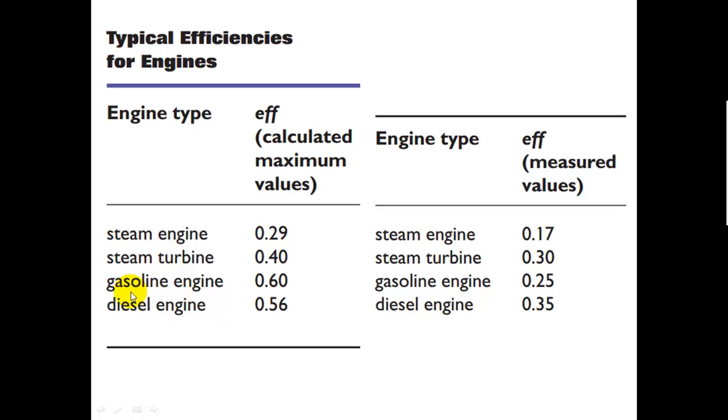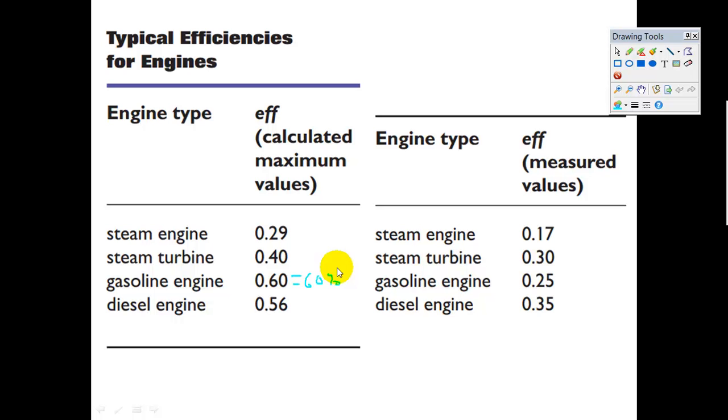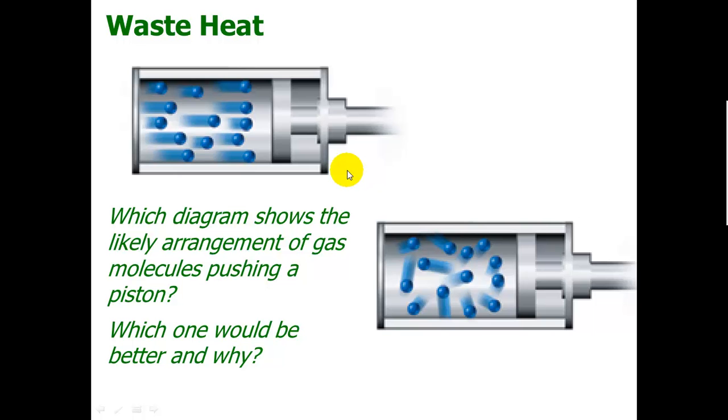These are some typical efficiencies for engines. Let's take a look at a gasoline engine in a car. I say this is efficiency, calculated maximum values, and it says 0.60. We should recognize that that is 60%. That is maximum. That's just based on what the theory of thermodynamics says you could possibly achieve. Basically, it comes down to the difference in temperature between how hot the engine is compared to how cool the surroundings are. The hotter you can run your engine, the more efficient it becomes. That should make sense because the hotter we make our engine—the walls of the cylinder—the less energy is given up by the molecules inside. A molecule hitting hot walls will bounce off with more energy than if the walls were cool.